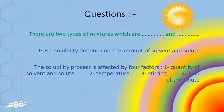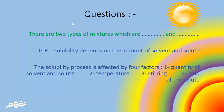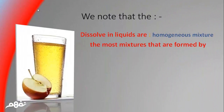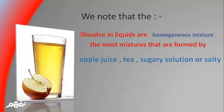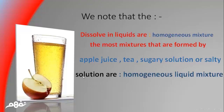Question: there are two types of mixture. Give the reason: solubility depends on the amount of solvent and solute, because the solubility process is affected by four factors: 1. Quantity of solvent and solute. 2. Temperature. 3. Stirring. 4. (fourth factor). We note that substances that dissolve in liquids form homogeneous liquid mixtures, such as apple juice, tea, sugary solution, or salty solution.